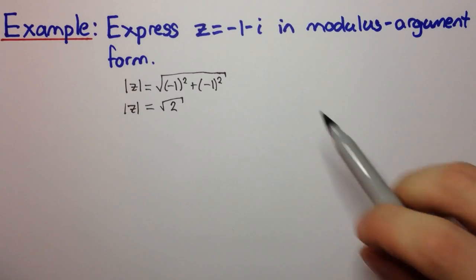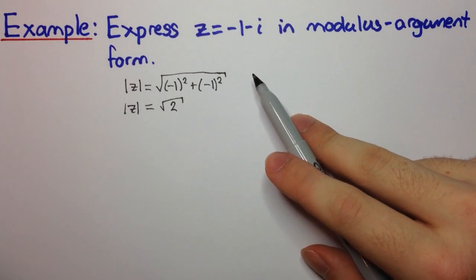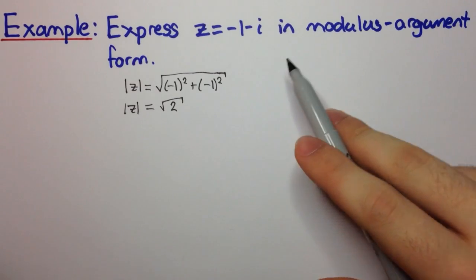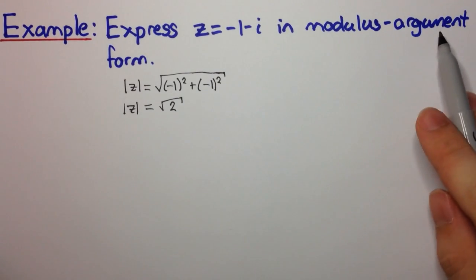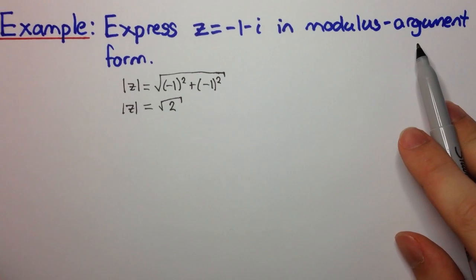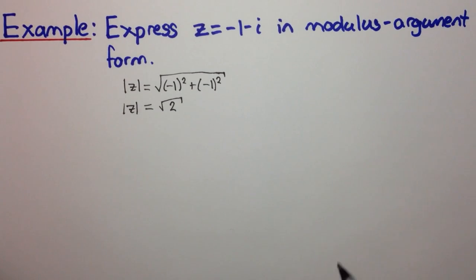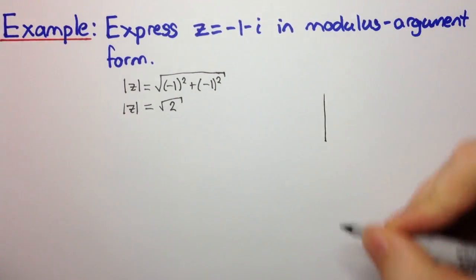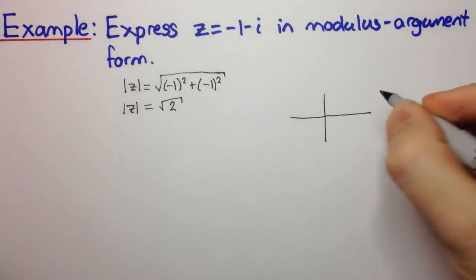Now, this is an area where some students tend to have a bit of trouble converting to get the argument when converting into mod-arg form. So the best thing to do, in my opinion, is to plot the point. Draw a rough plot of where the point is.